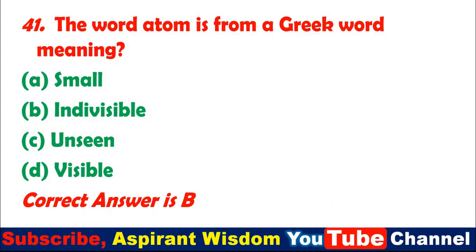Question 41: The word 'atom' is from a Greek word meaning: A. Small. B. Indivisible. C. Unseen. D. Visible. Correct answer is B.